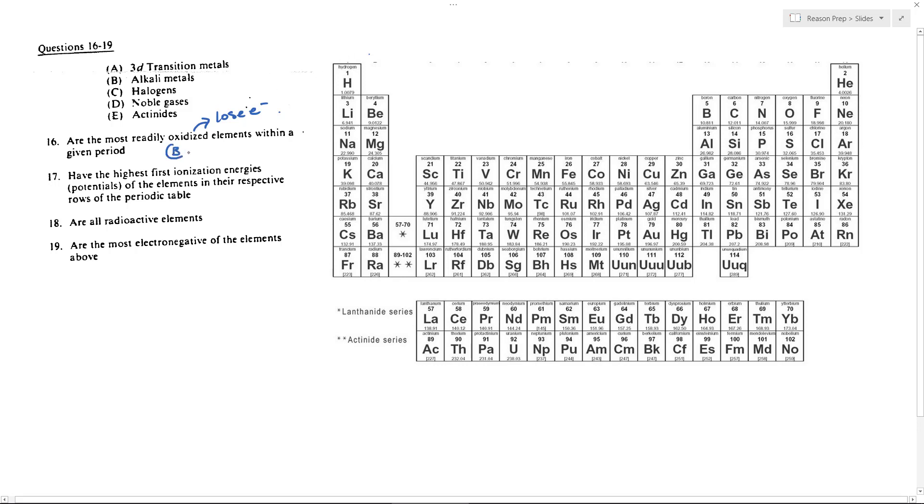This is choice B. These are your alkali metals. These are the ones that become plus one charge, Li+, Na+, because they lose that S1 electron to jump down to the previous noble gas in terms of its electron configuration. So it's pretty easy for it to lose that electron relative to the other elements.